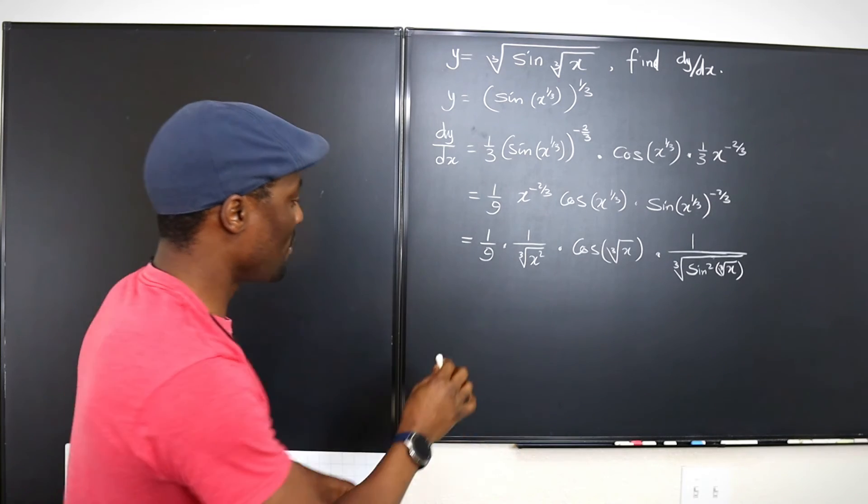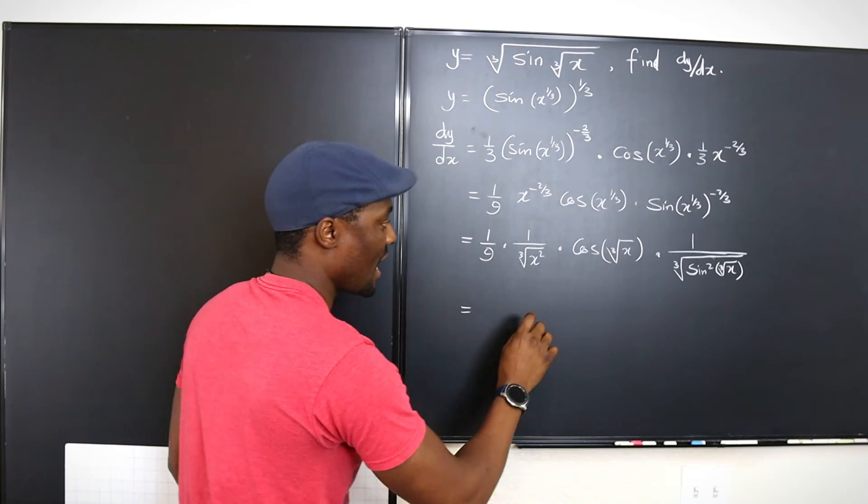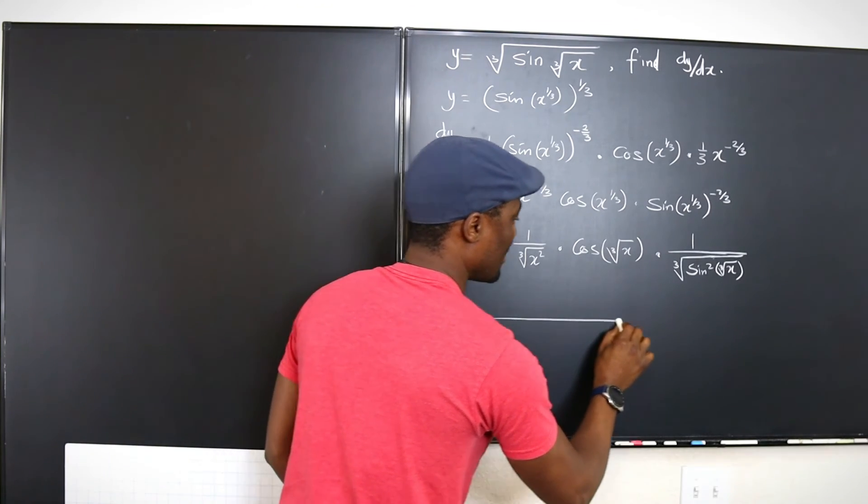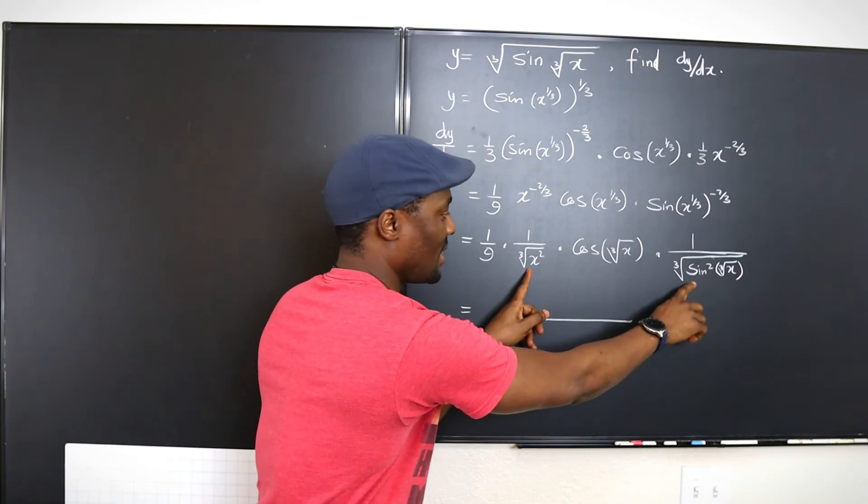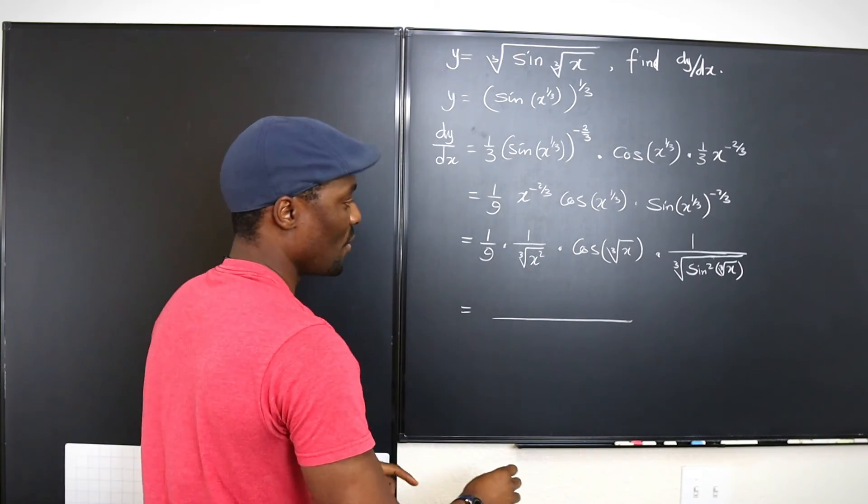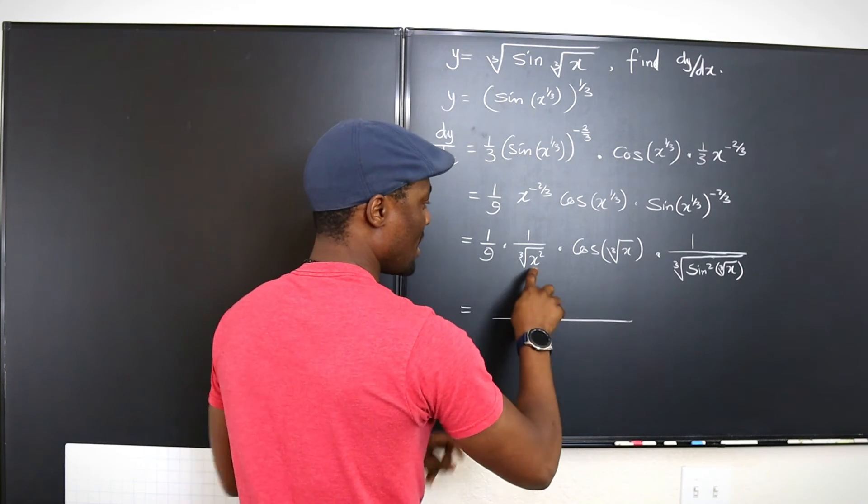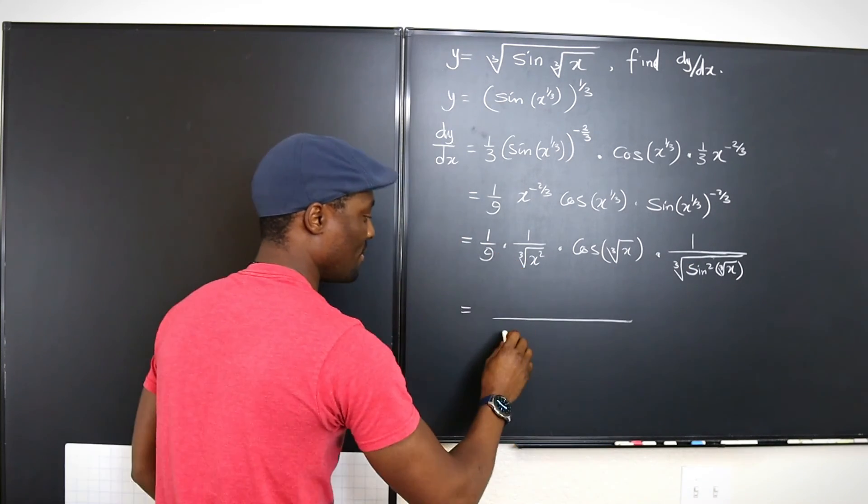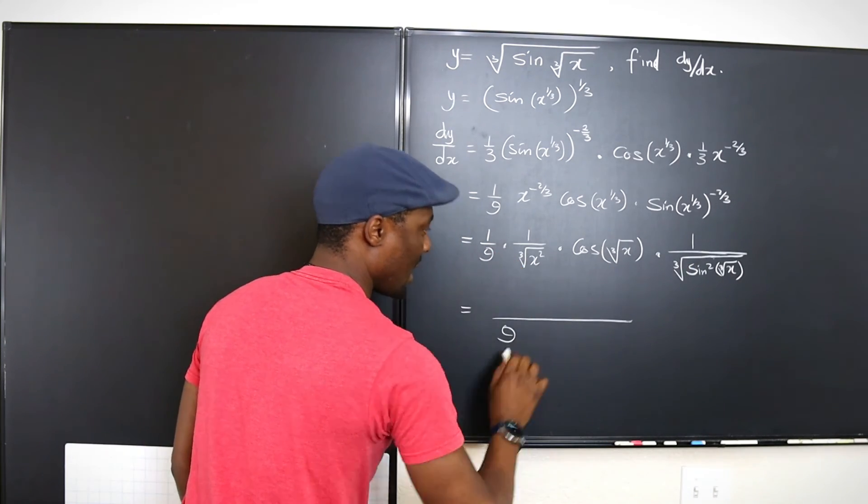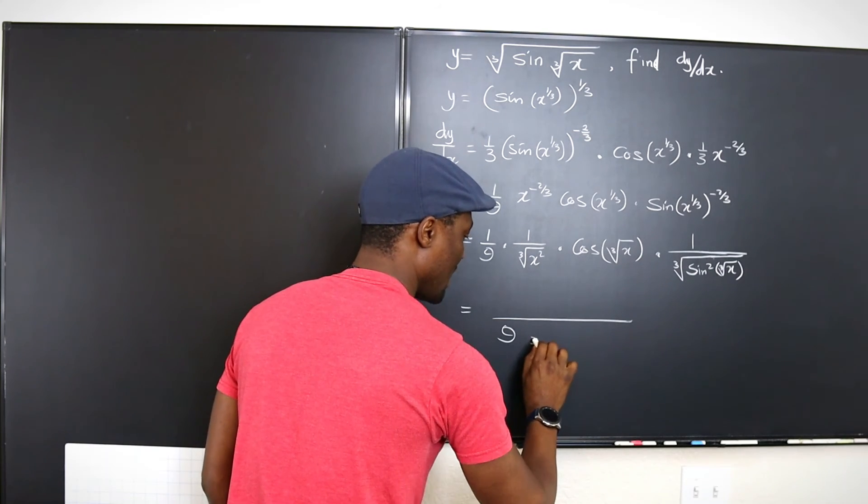Now we can make one fraction out of all of these and write it this way. We can combine this because this and this have cube roots. So we can actually take the cube root, put these two together, put one over nine. So we have nine at the bottom here. And then we have the cube root sine, which covers x squared,